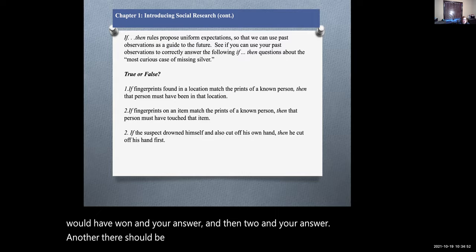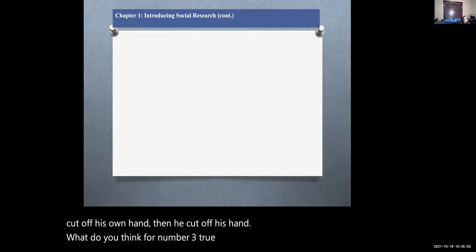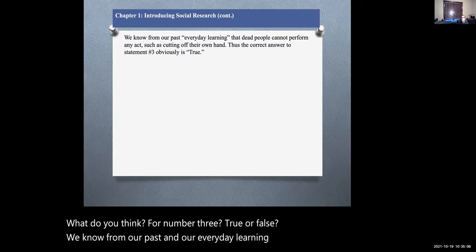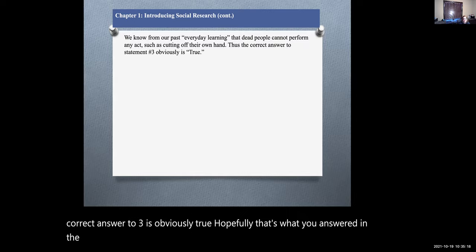Number three. If the suspect drowned himself and cut off his own hand, then he cut off his hand first. What do you think for number three, true or false? We know from our past and our everyday learning that dead people cannot perform any act, such as cutting off your own hand. So the correct answer to number three is obviously true. Hopefully that's what you answered in the comments.